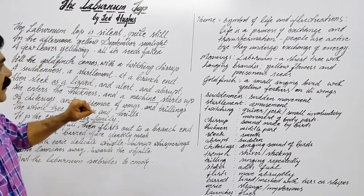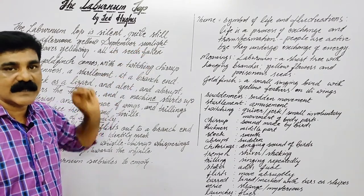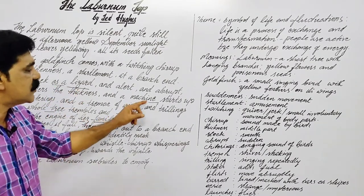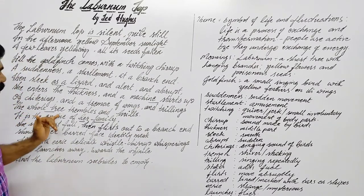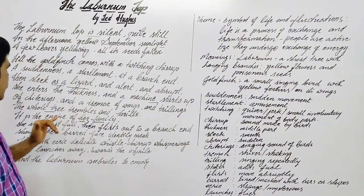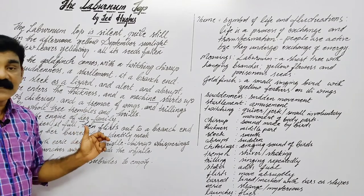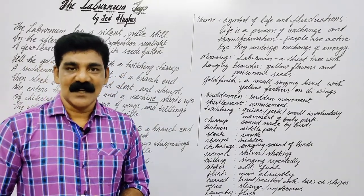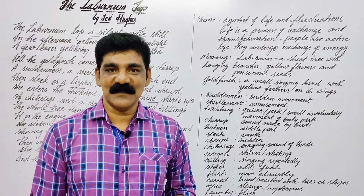Some poetic devices used in the poem: 'silent September sunlight' uses alliteration — the S sound is repeated. 'Sleek as a lizard' is a simile. 'A machine starts up' is a metaphor. 'The whole tree trembles and thrills' is a personification. 'It is the engine of her family' is a metaphor. I hope all of you understood this poem very well. Thank you for watching. Please like and subscribe to my channel.